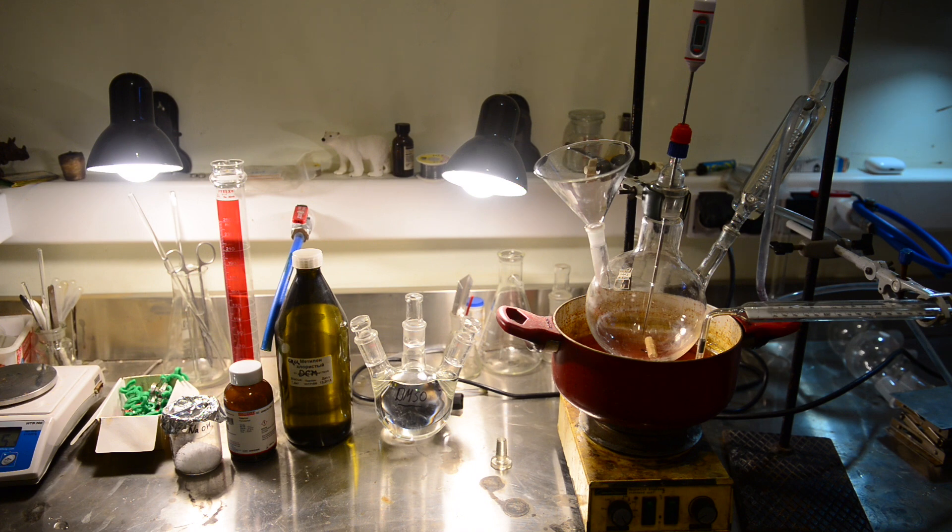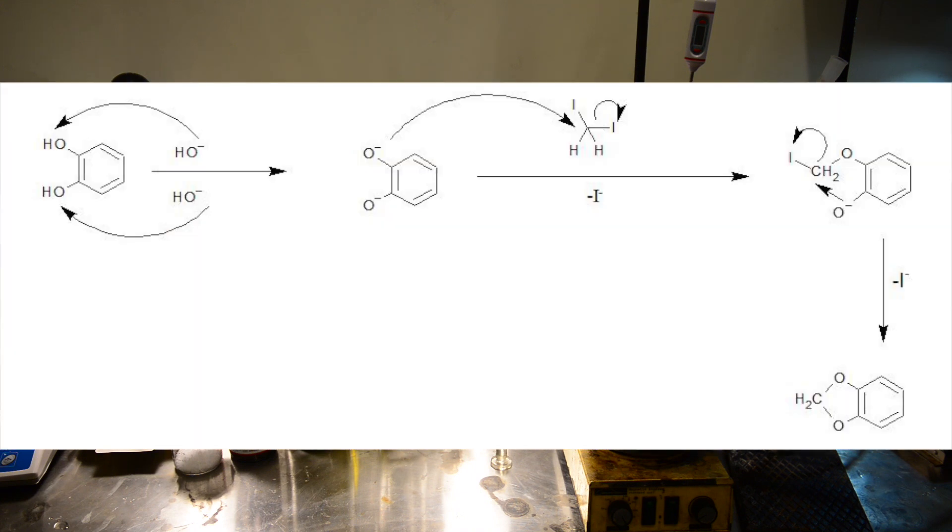Methylation reaction type is SN2. We have covered this type of reaction in our previous video where we prepared allyl bromide. The reaction mechanism in case of using diiodomethane looks like the following: the final product is methylenedioxybenzene, 1,3-benzodioxole, that is methylated catechol.